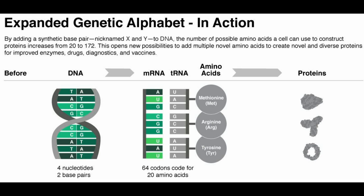Expand a genetic alphabet in action. By adding a synthetic base pair, nicknamed X and Y, to DNA, the number of possible amino acids a cell can use to construct proteins increases from 20 to 172. This opens new possibilities to add multiple novel amino acids to create novel and diverse proteins for improved enzymes, drugs, diagnostics, and vaccines.